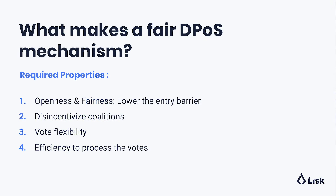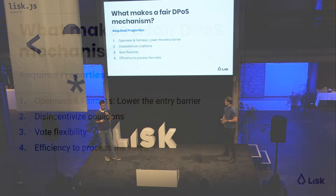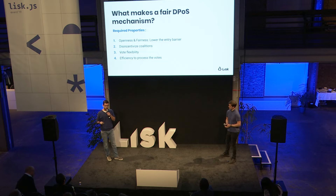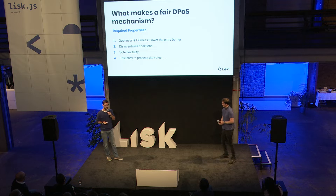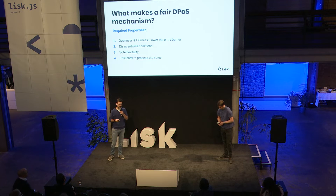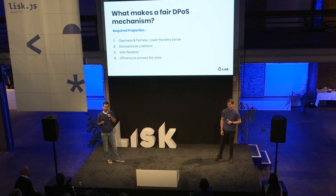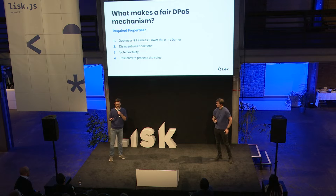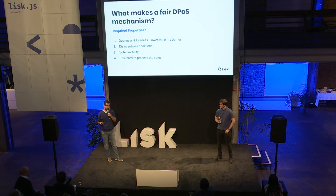Here you see four properties listed. After feedback from the community and our internal research, we think these four properties are what make a DPoS mechanism fair. The first one is openness and fairness to lower the entry barrier — delegates should forge blocks with a probability related to their amount of support from voters. Even small delegates with small support should get a small reward for their work in participating in and securing the network.